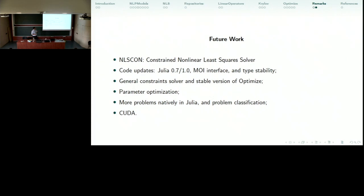On our future work, we have this NLSCon, which are constrained nonlinear least squares solvers. It's currently what I'm working on. We have code updates planned on Julia 1.0 and the MOI interface, which I hope will be very easy to do. We also have type stability issues that we hope to fix by the end of this month, I don't know. We have a general constraint solver planned and a stable version of Optimize which we hope to release soon. We also intend to work a little with parameter optimization, especially automatic parameter optimization. And we would like to have more problems natively in Julia and some problem classification.